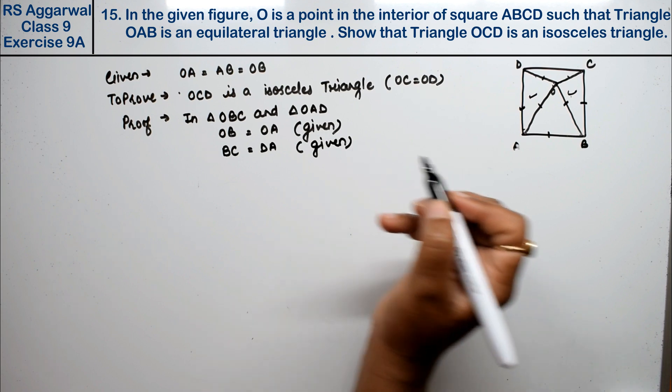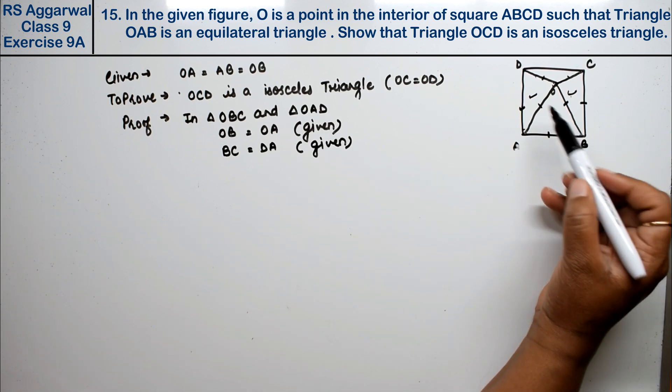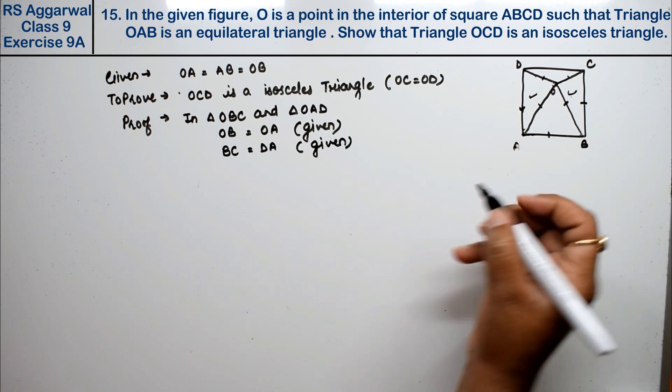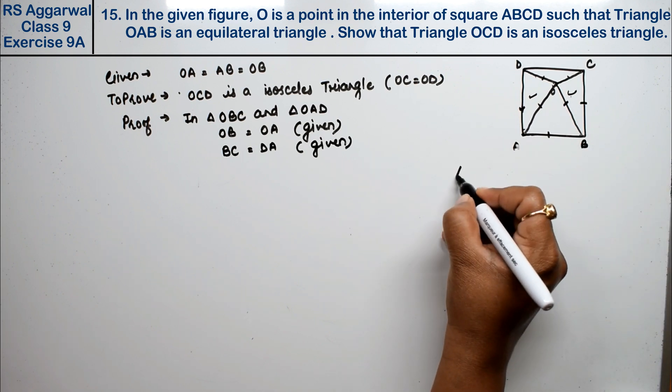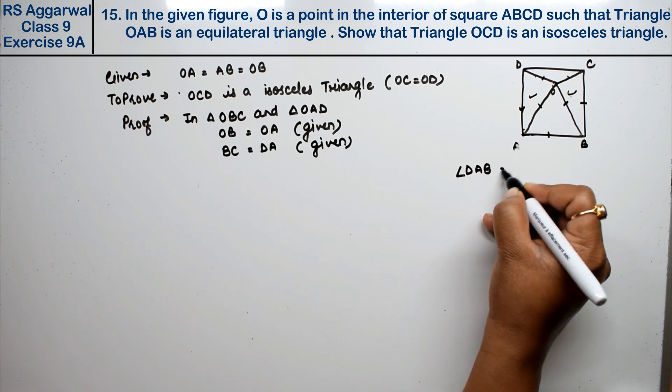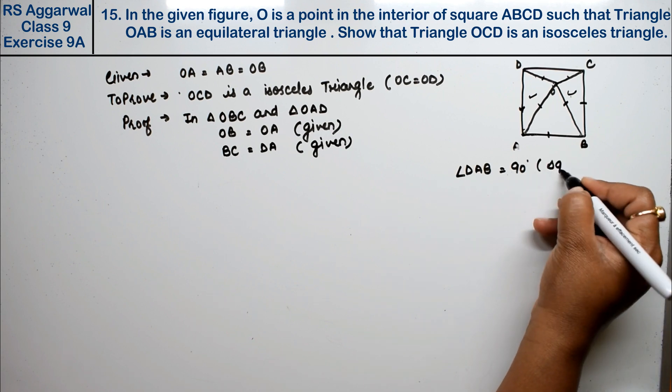Now for the angles: angle DAB is equal to 90 degrees because it's a square.